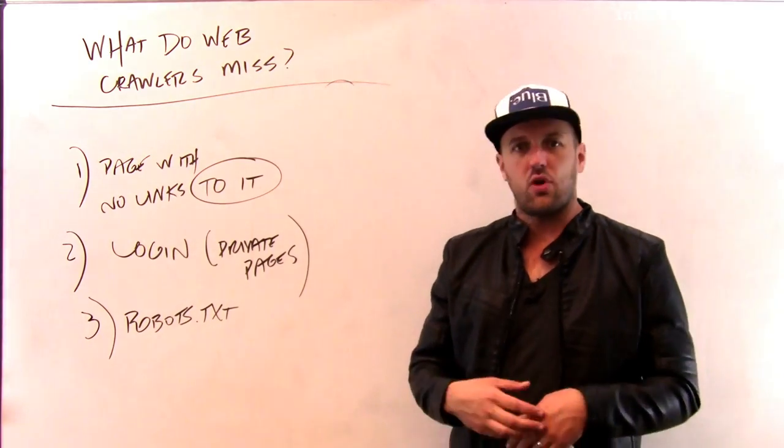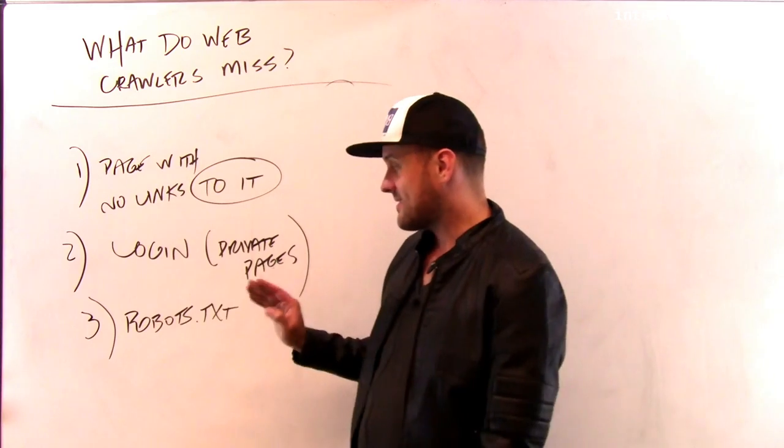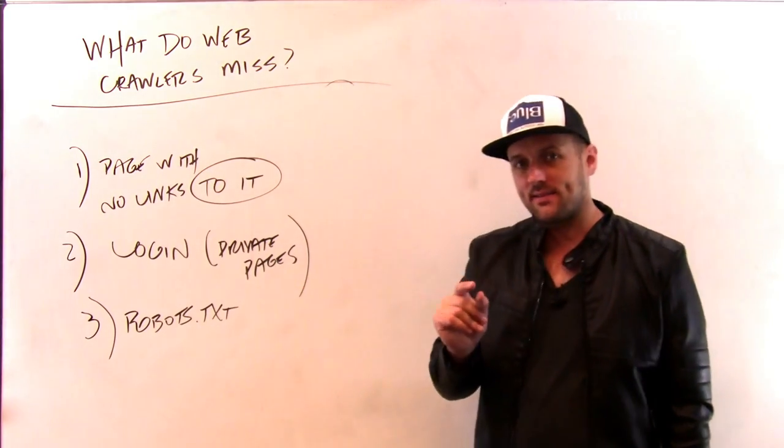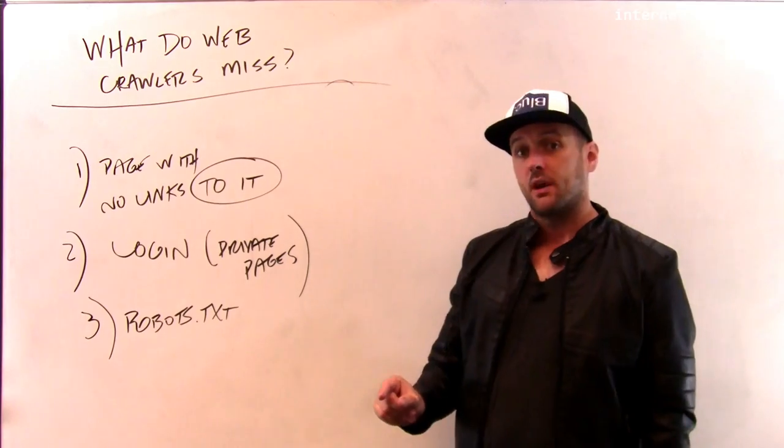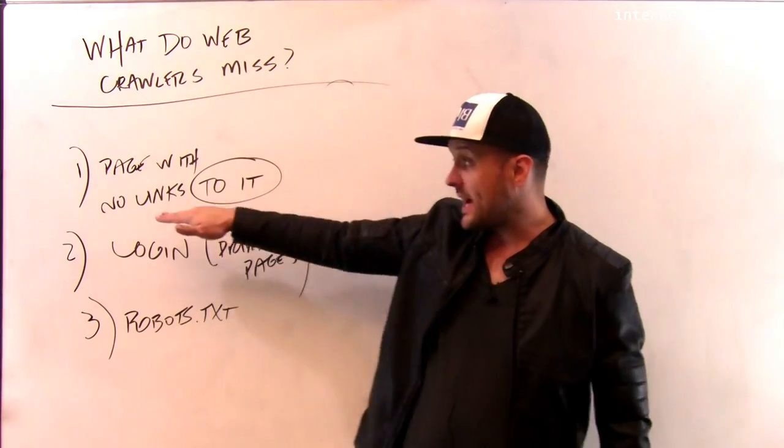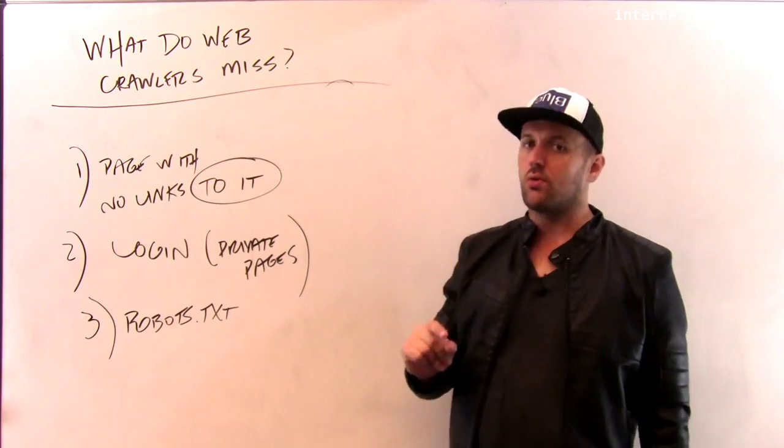So for example, if it was crawling to internetclass.org, it would look for www.internetclass.org slash robots.txt. And if that file exists, that file contains instructions for the robot. Those instructions can help it find pages that have no links to them, but it can also tell the robot to ignore certain pages.